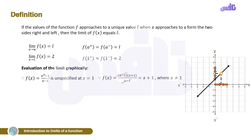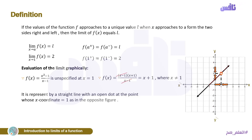The graphical function of x + 1 is not exactly the same as (x² − 1)/(x − 1) — it is the same straight line, but with an open dot at x = 1 to show the excluded point. Graphically, as x approaches 1 from both sides, f(x) approaches 2. It is represented by a straight line with an open dot at the point whose x-coordinate equals 1, as in the figure. When x tends to 1 from right and left, f(x) equals 2.